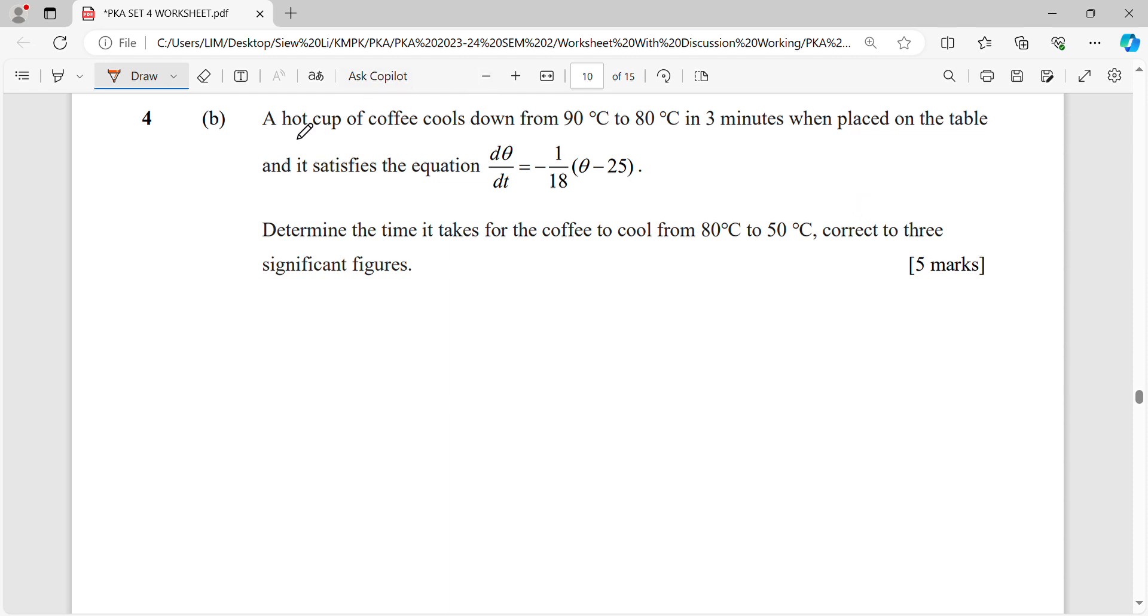Okay, so for this question, a hot cup of coffee cools down from 90 Celsius to 80 Celsius in 3 minutes when placed on the table. It satisfies the equation dθ/dt equals negative 1 over 18 times (θ minus 25). K constant given, surrounding temperature also given. Alright, and then determine the time to cool down from 80 Celsius to 50 Celsius correct to 3 significant figures.